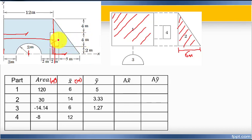The rectangle is 4 meters high, so the center is at 2 meters. Therefore, 2 meters plus 2 meters equals 4 meters in the y direction to the shape four center.